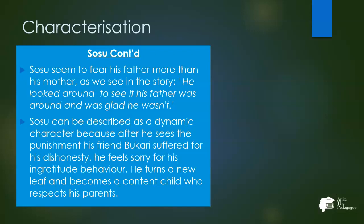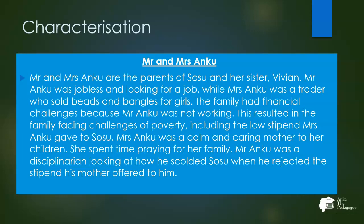Sosu can also be described as a dynamic character because after seeing the punishment given to his friend Bukhari for dishonesty and stealing, he feels sorry for his own ungrateful behavior. He turns a new leaf and becomes a content child who respects his parents, changing from an arrogant, discontent child to a content and respectful one by the end of the story.